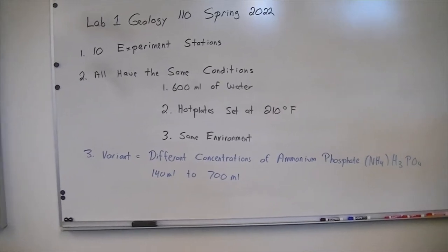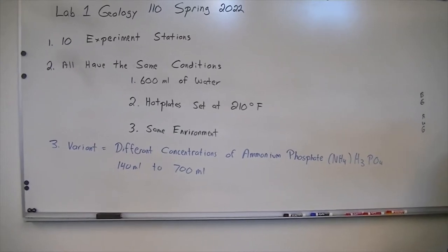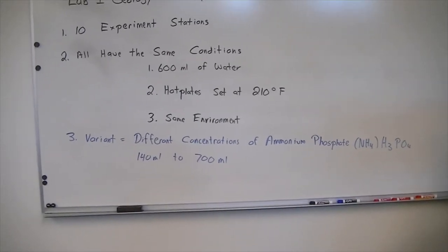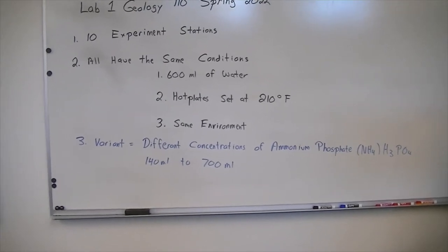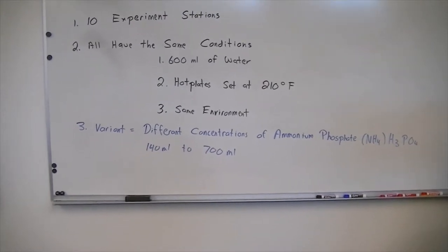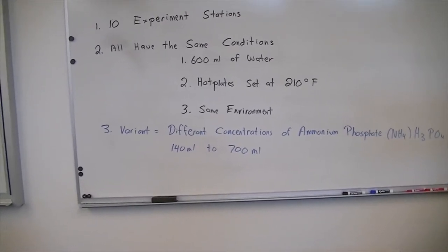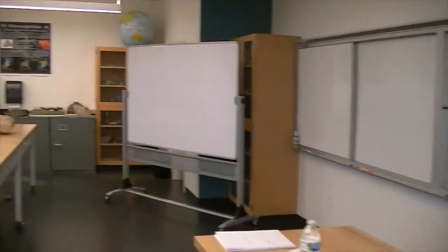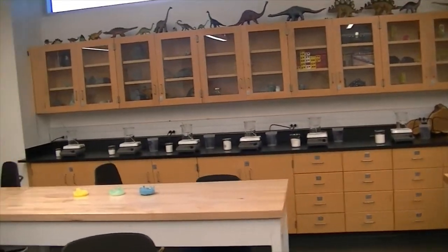The only variant, the thing that is different, is that the concentrations of ammonium phosphate, which is NH4H3PO4, varies. Some stations have only 140 milliliters, that's the volume of the ammonium phosphate, and other stations have 700 milliliters. I worked this out progressively from the smaller concentration at number one to the larger concentration at 700 milliliters at station number 10. So this is the experiment, and we have it set up over here in the lab.